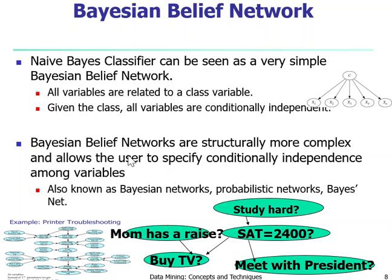A Bayesian belief network is structured more complex. I have a larger picture of this towards the end of this section. When we troubleshoot a printer, many factors could lead to different kinds of errors. There are different variables that might cause different symptoms. Intermediate symptoms cause other symptoms and various printer errors. This is a more complex belief network where the assumption looks different — this is a special case of the network's assumption, which we will discuss more.